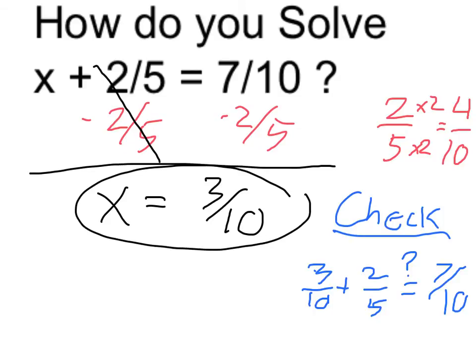So let's just think this through to make sure that it makes sense. I'm claiming that 3 tenths plus 2 fifths equals 7 tenths. Well, as we said, 2 fifths is actually equal to 4 tenths. So 4 tenths plus 3 tenths in total does give us 7 tenths, and our answer checks out. Thank you.